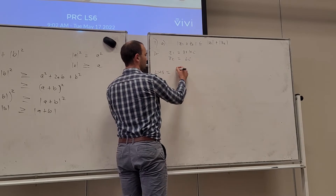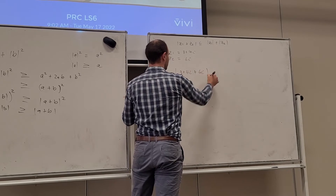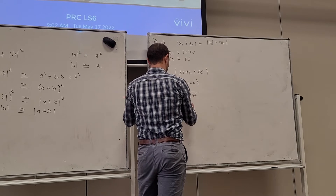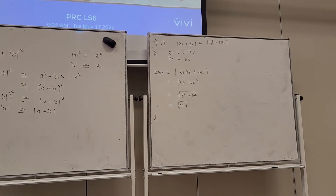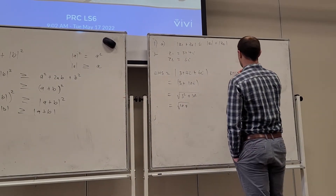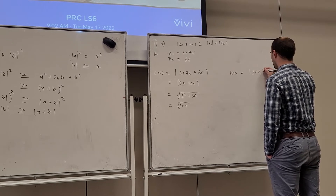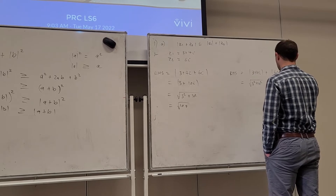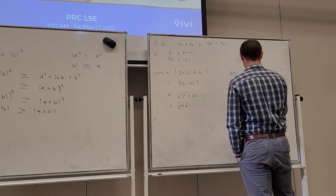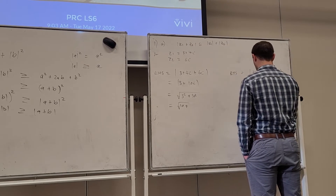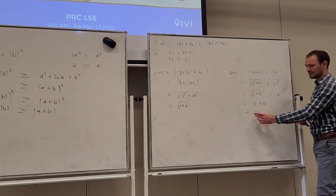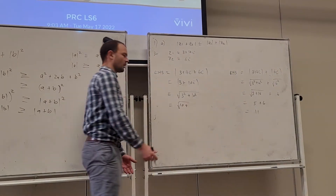On the left-hand side, we have |3 + 4i + 6i| = |3 + 10i| = √(3² + 10²) = √109. On the right-hand side, we have |3 + 4i| + |6i| = 5 + 6 = 11. I know it's going to be larger because 11² = 121, and √109 is less than 11, so the inequality is verified.